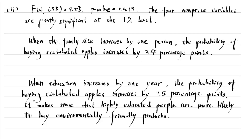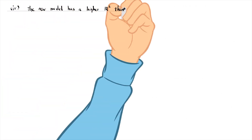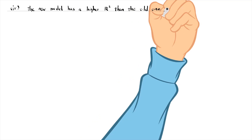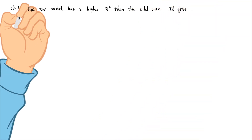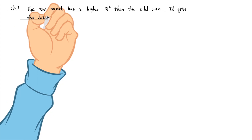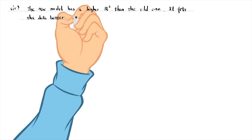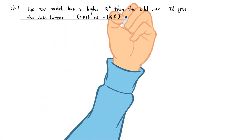In part 4, we replace family income with its logarithmic term. The new model has a higher R-squared. It fits the data better than the model in part 2. It is 0.1116 versus 0.1098.